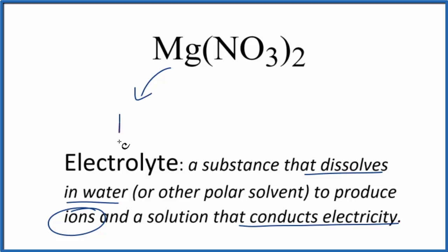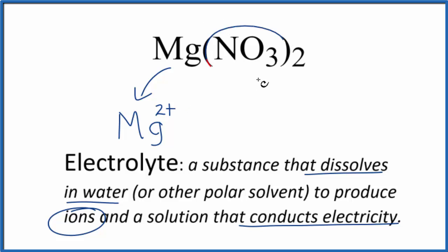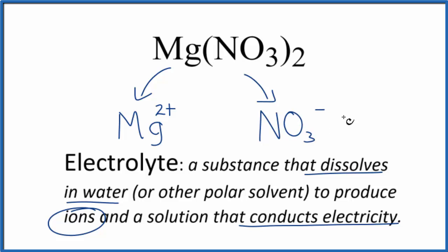You'll get Mg²⁺, the magnesium ion — it's in group 2 on the periodic table. The nitrate ion is NO₃⁻, with an ionic charge of 1-, and you just need to memorize that. So we have 2 of these nitrate ions.